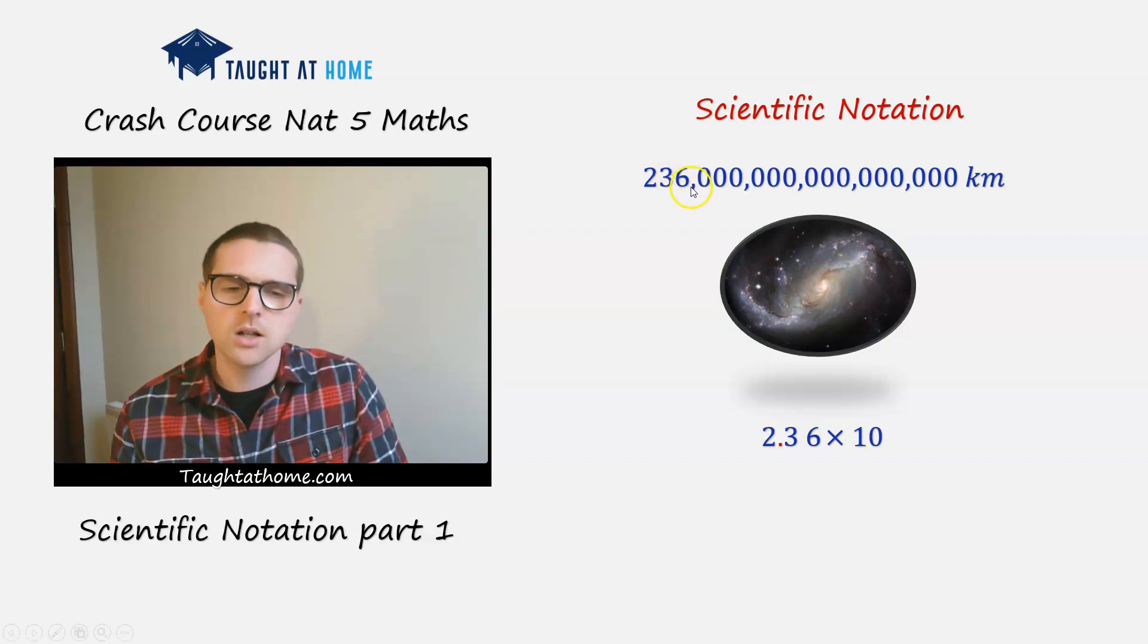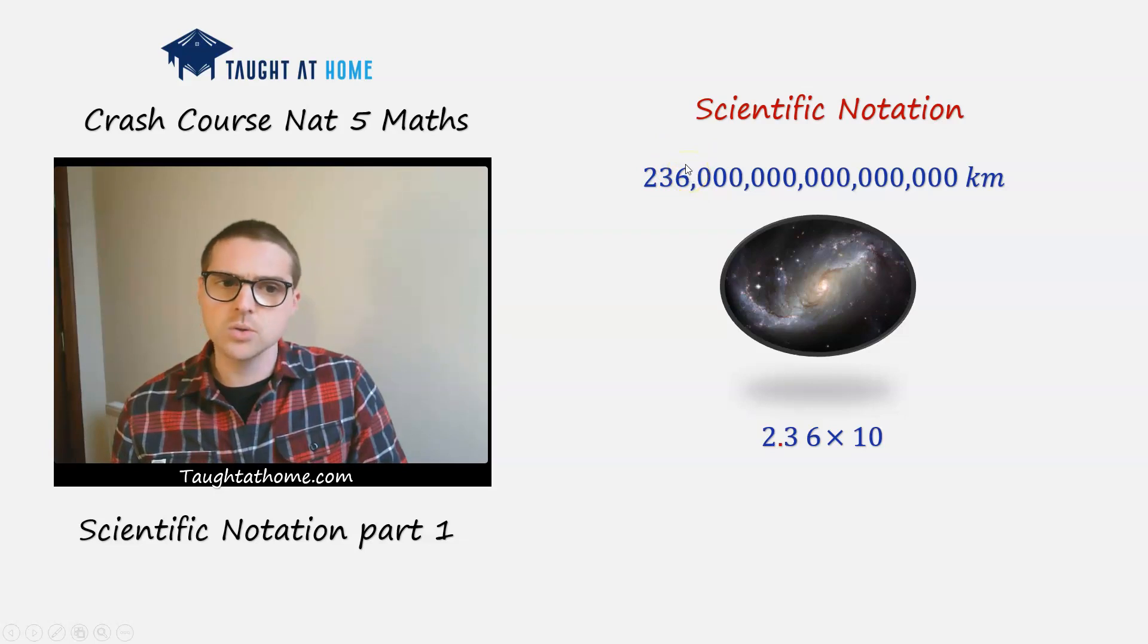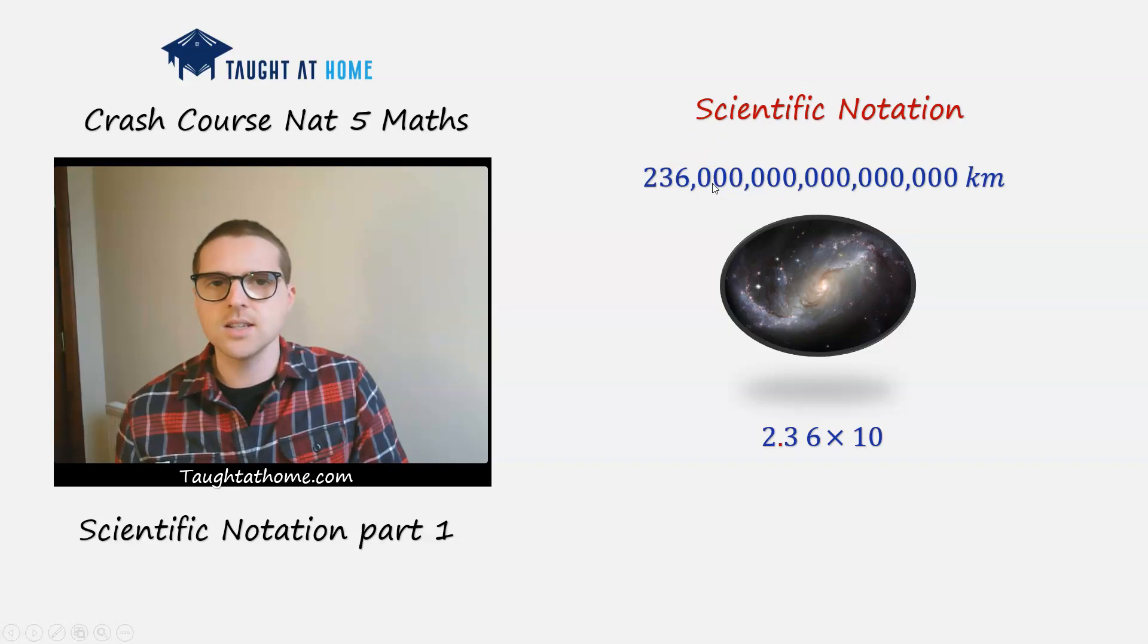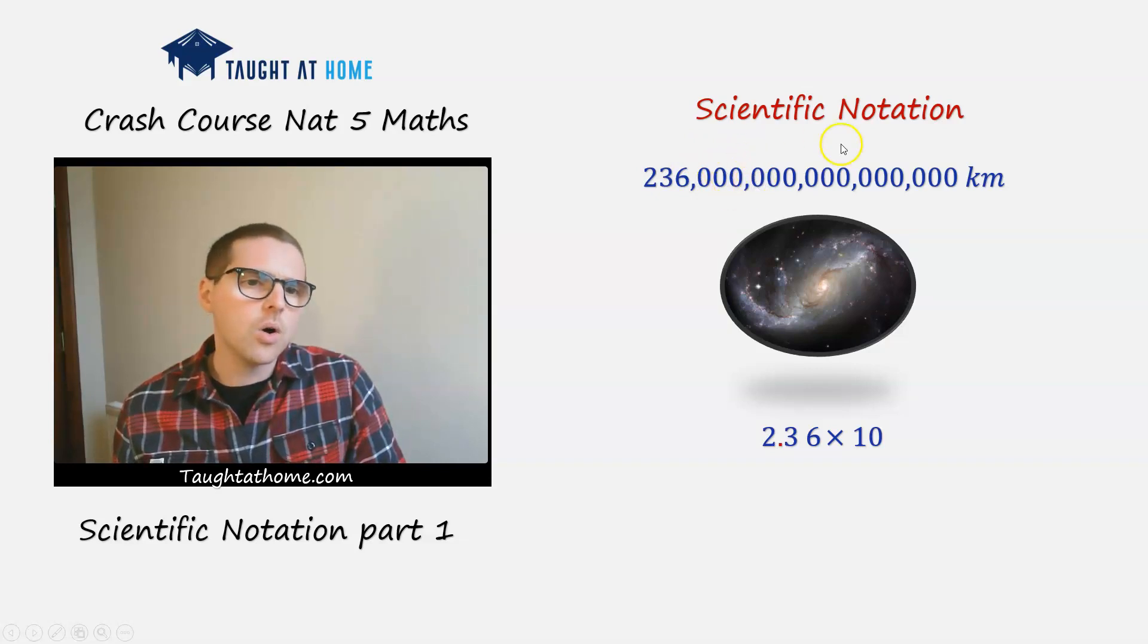If we multiply it by 10 squared, so 100, it's going to be here. So if we multiply it one more time by 10, so 10 to the power of three, it's going to go here. So we get 2360. But we want to move it all the way to the end.